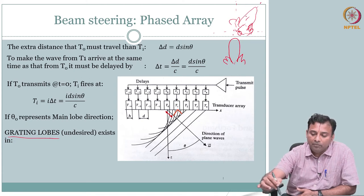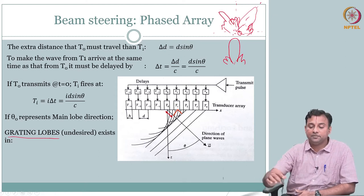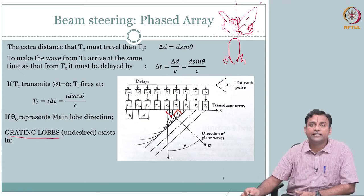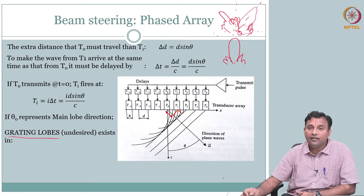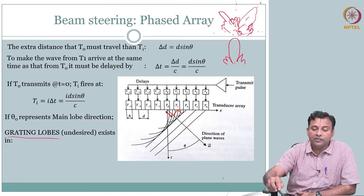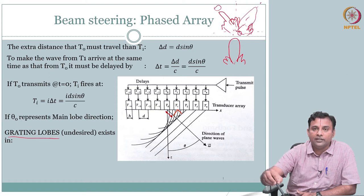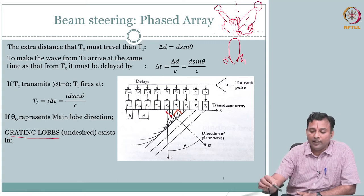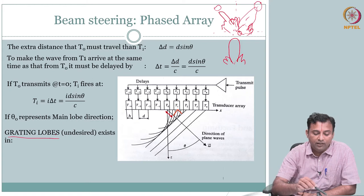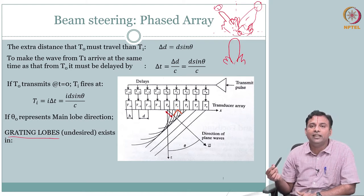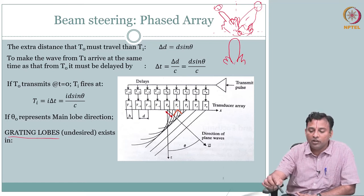The grating lobe is a bigger problem: when I am looking in this direction, what if I have another copy of the main lobe at a completely different angle? If I have another main lobe and side lobe at another angle, then I am actually sending the wave in that direction too. I might think there is a target at theta, but it turns out the reflection came from the grating lobe direction. I would register the object at the wrong location because of the grating lobe.